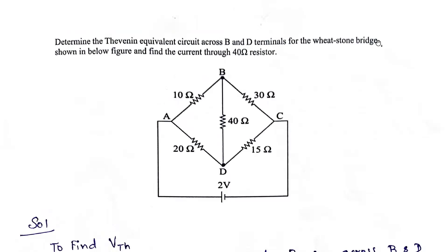Very good morning. Today we are going to see a problem on Thevenin's theorem. Determine the Thevenin's equivalent circuit across the points B and D. There are four terminals given: A, C, B and D. We need to determine the Thevenin's equivalent circuit across points B and D for the Wheatstone bridge, and find the current through 40 ohms. We need to solve by using Thevenin's equivalent circuit.